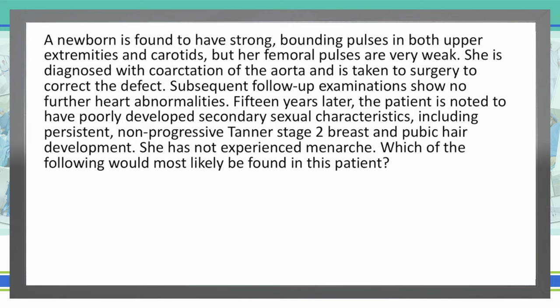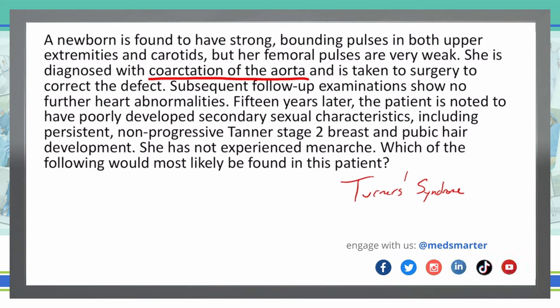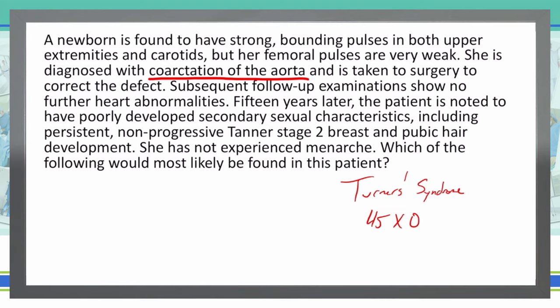What we're dealing with here is someone who had coarctation of the aorta when they were born, and then started having a lack of secondary sexual characteristics and development once they hit the age of puberty. This sounds like Turner syndrome. Remember, Turner syndrome is 45XO — they just don't have that second X chromosome.